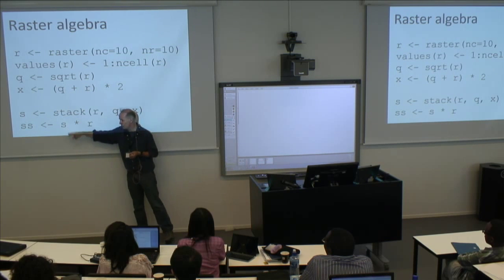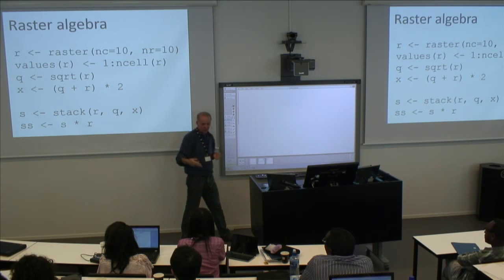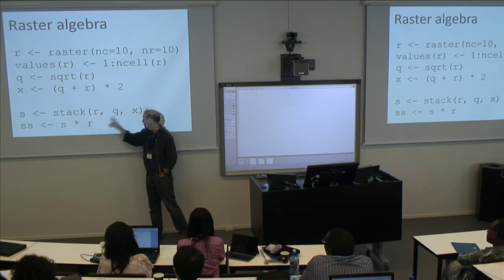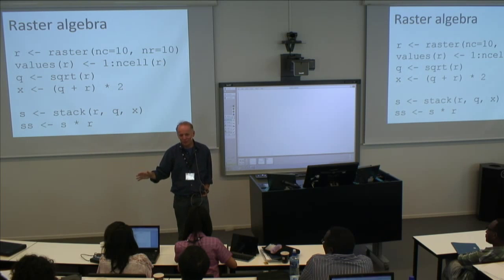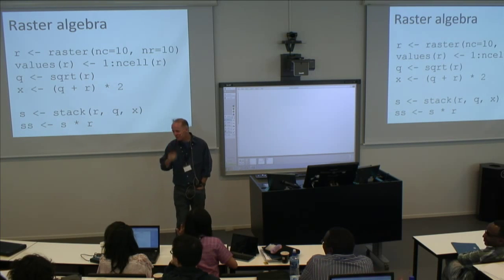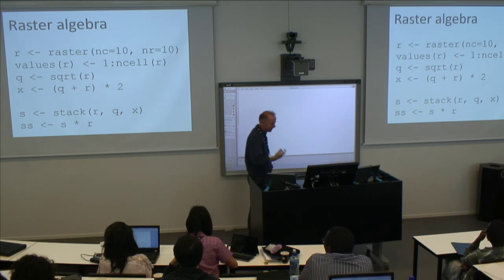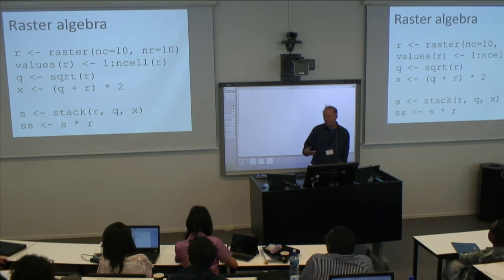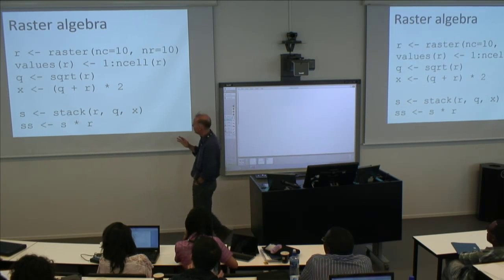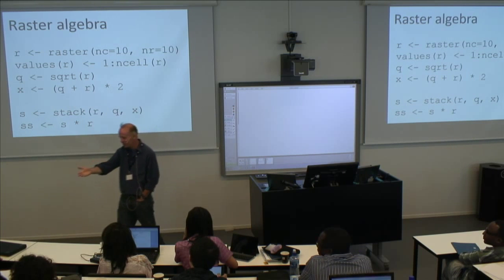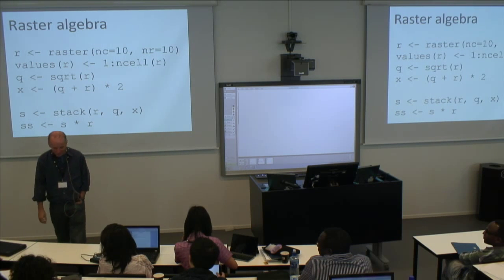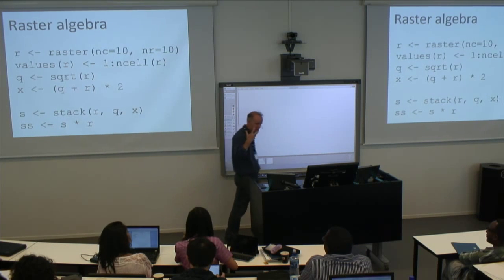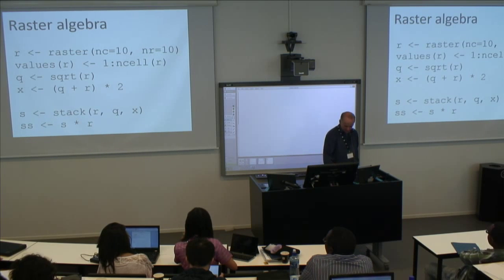In typical R fashion: you have three layers, you multiply by one layer, the shortest one gets recycled. So each layer in S gets multiplied by r — you end up with r times r, q times r, and x times r. About half of you can follow this, which is okay. Tomorrow we'll work on this and you'll see how it works. I very much believe that learning is about repetition. So it doesn't matter if it's somewhat over your head the first time — let's try to get a sense of what I'm talking about and it will become clear.